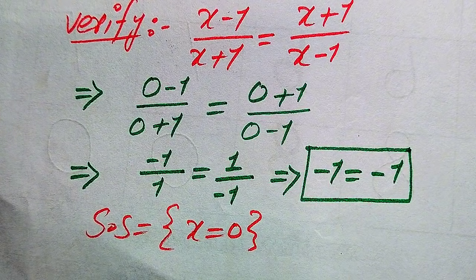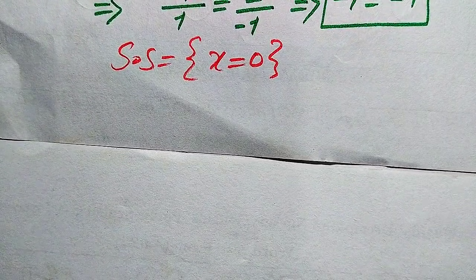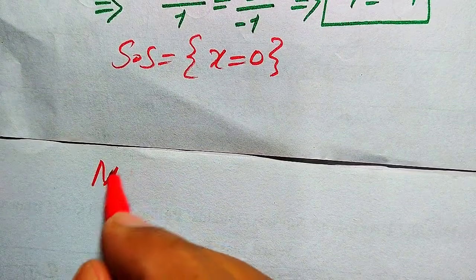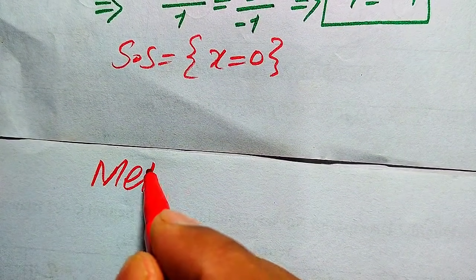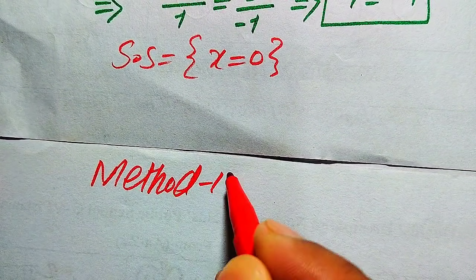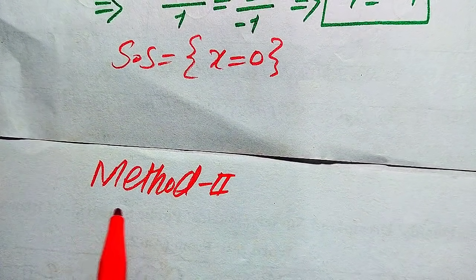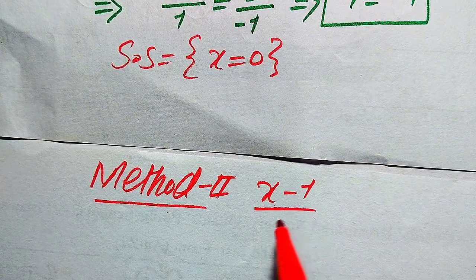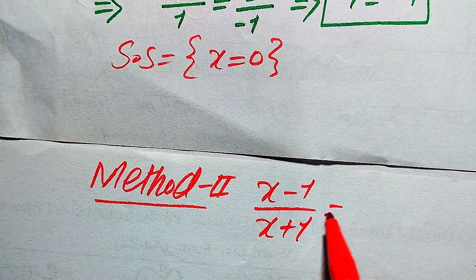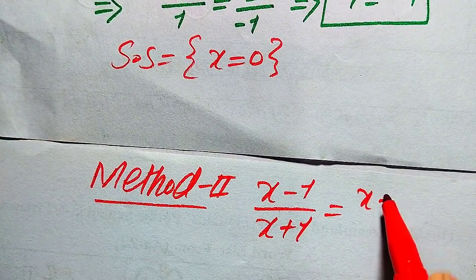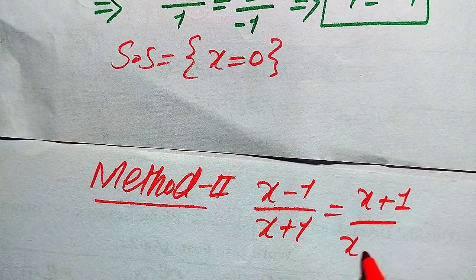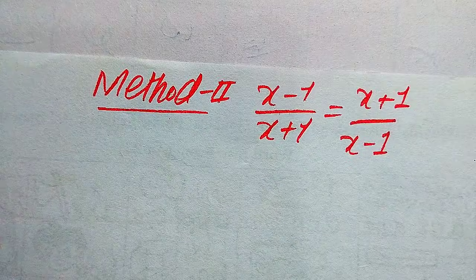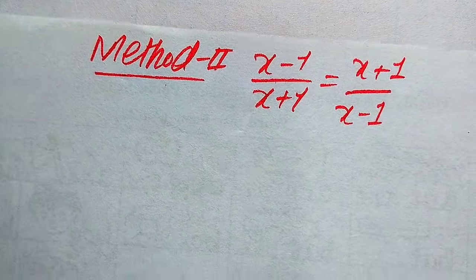The solution set of the given equation is {x = 0}. This is the final answer from the first method. Now we solve this problem using the second method, starting again with the given equation: (x - 1)/(x + 1) = (x + 1)/(x - 1).